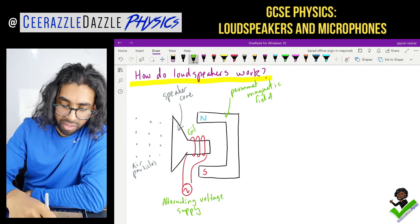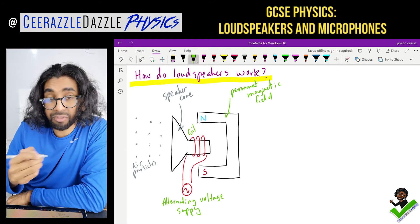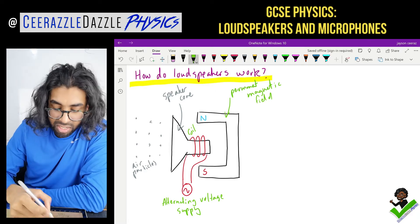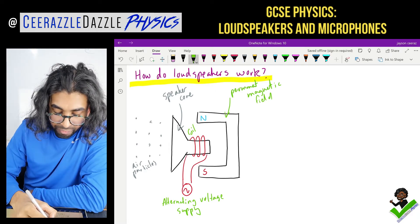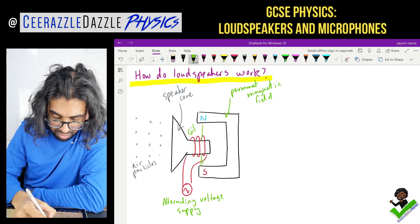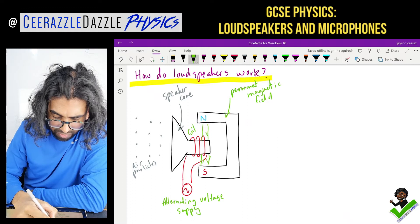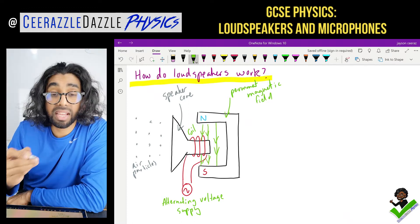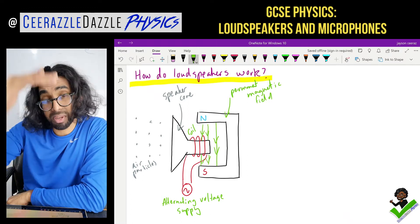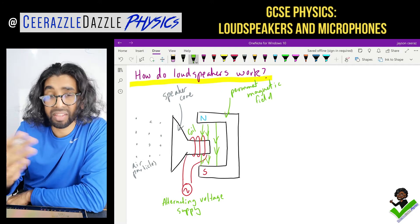First things first, let's draw the magnetic field from the permanent magnet. There's a magnetic field going all the way from the north to the south. Magnetic fields flow from north to south — that's step number one.